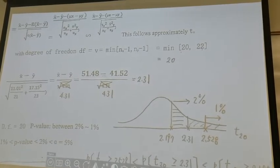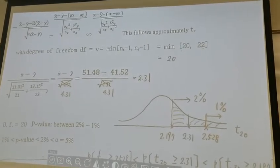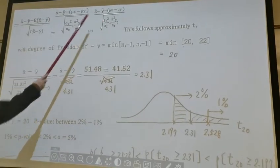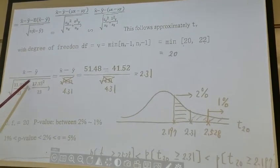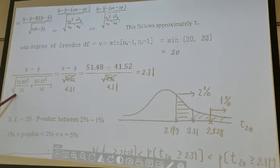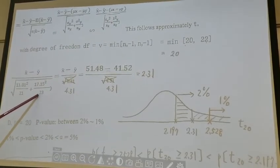And then we plug in the numbers. Sx is 11.01, Sy is 17.15, and nx is 21, ny is 23.